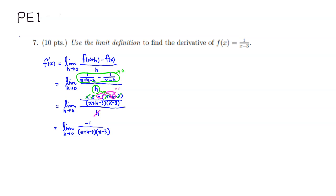Now we let h go to 0, so h disappears. We're left with negative 1 on top, and x minus 3 times itself on the bottom, which we write as x minus 3 squared. So the derivative of the given function f of x is negative 1 over quantity x minus 3 squared. That's the answer — I hope that was clear.